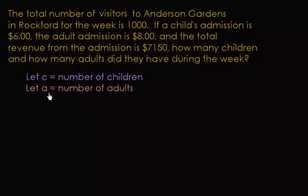The next thing is figuring out the equations. These equations are restrictions. We know 1,000 people went to Anderson Gardens during that week, so that's one of our restrictions or equations. If only 1,000 people went during that week, then A plus C, adults plus children, has to equal 1,000.